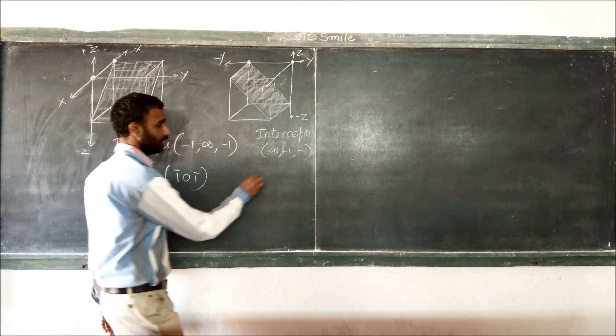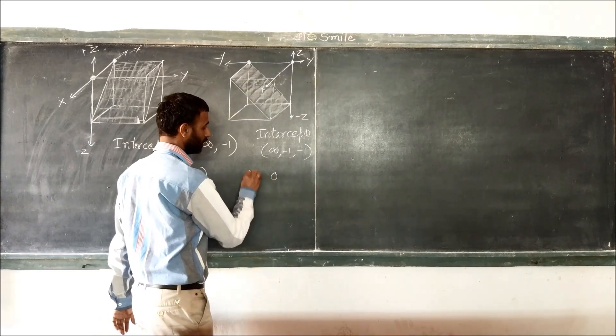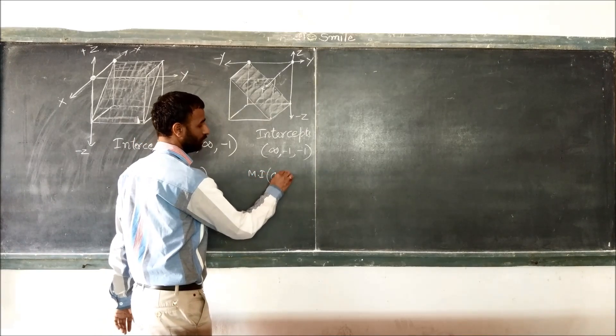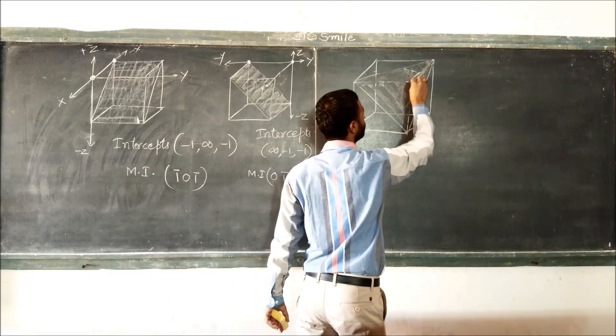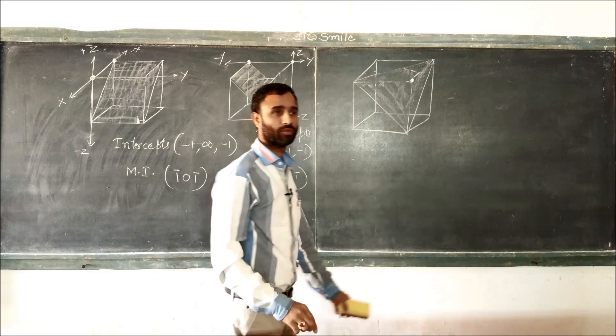So it is 0, Miller indices are 0, 1 bar and 1 bar.